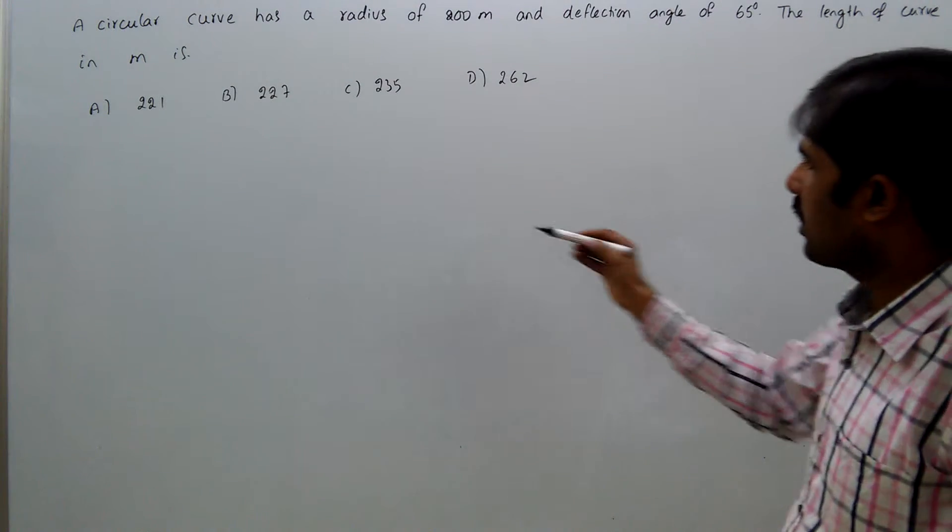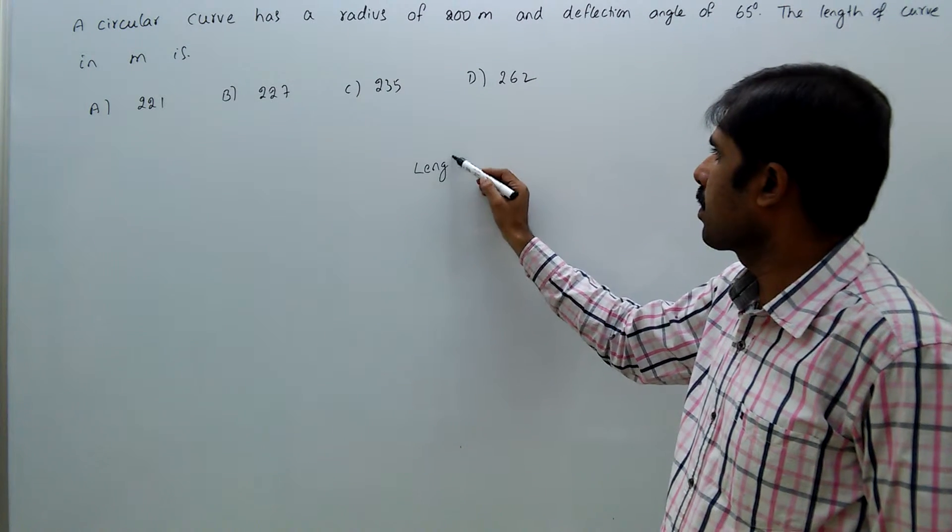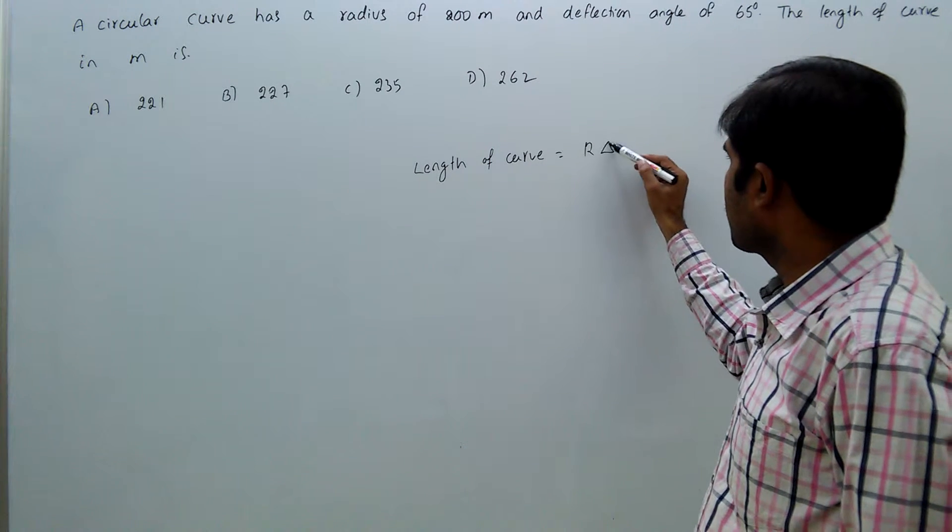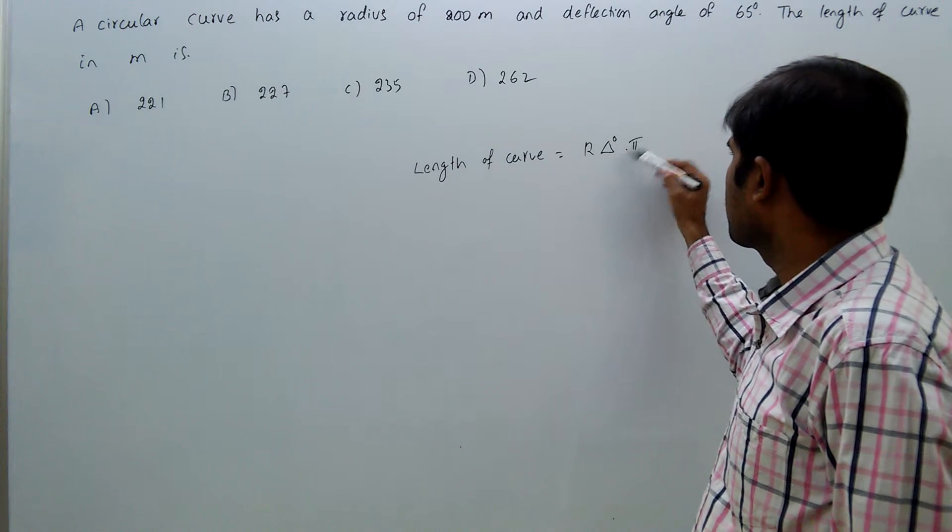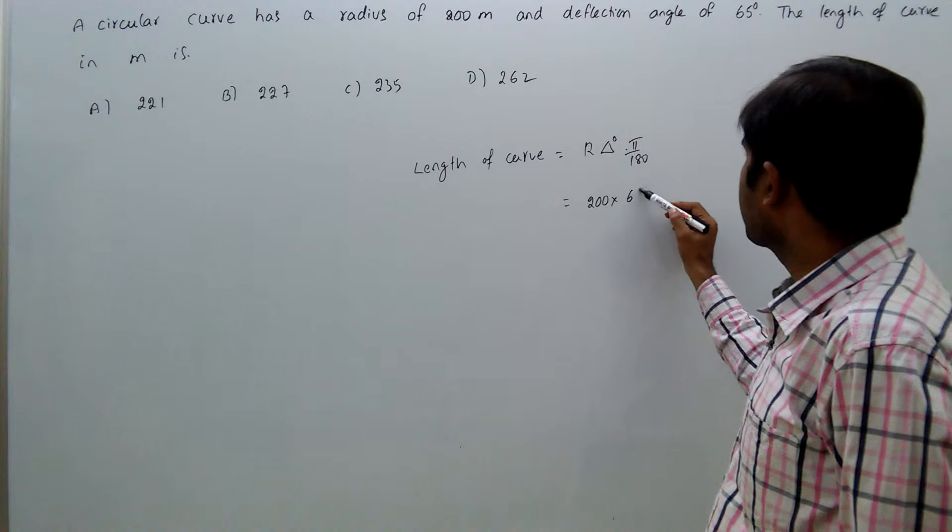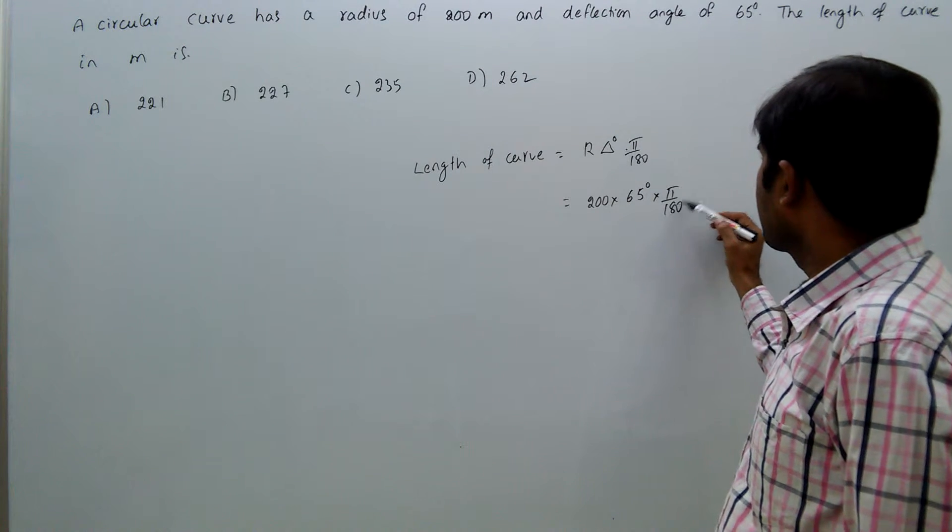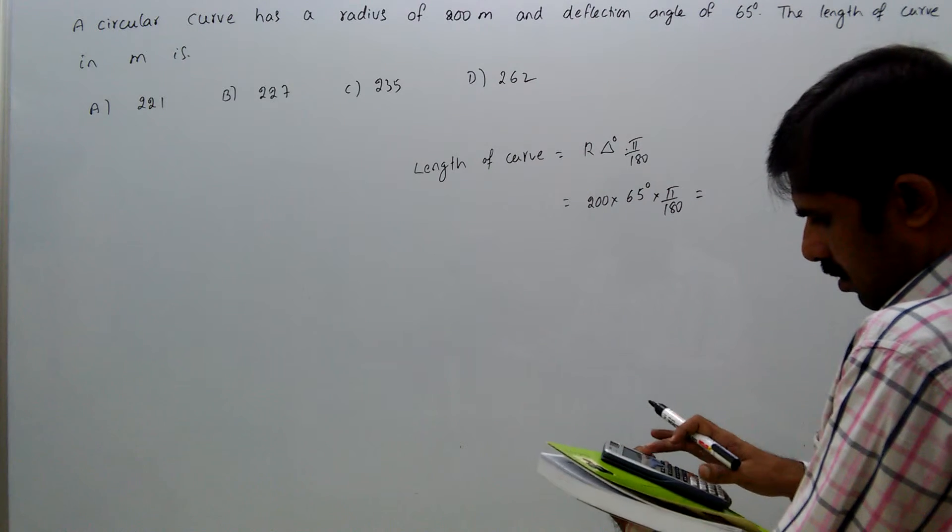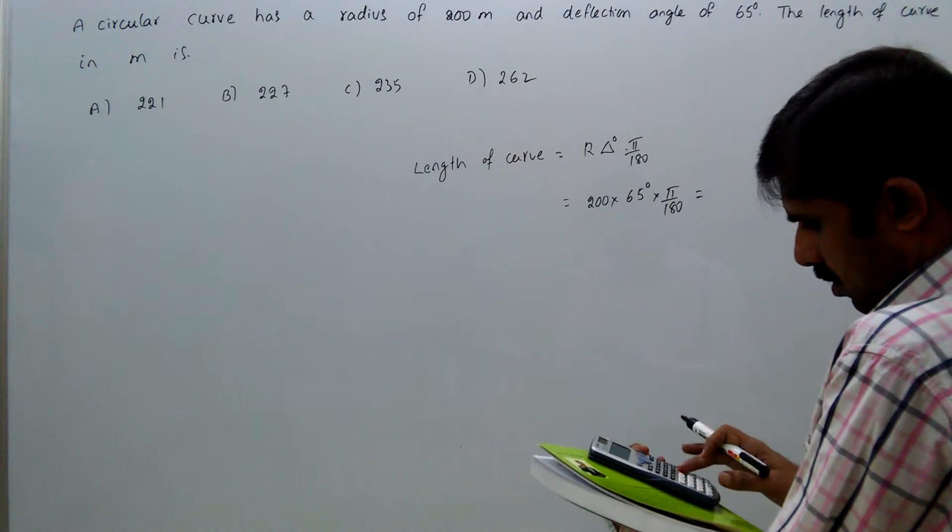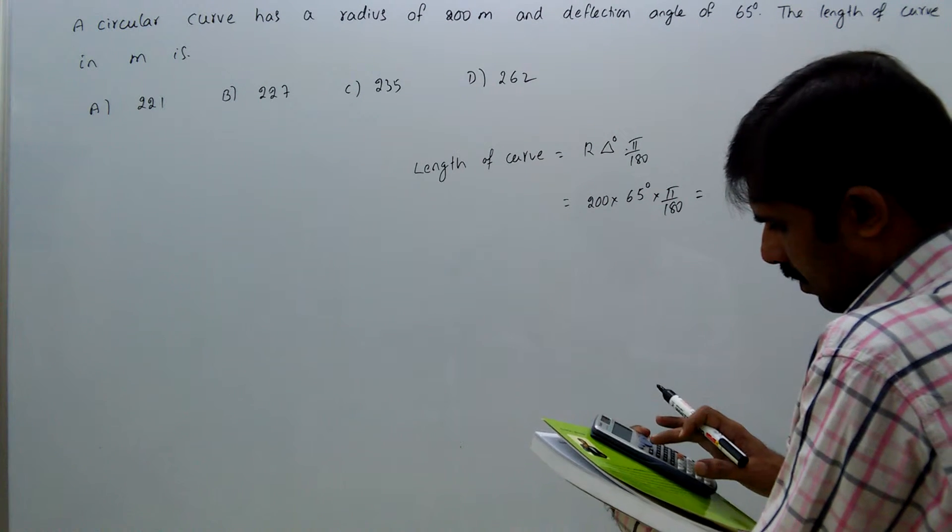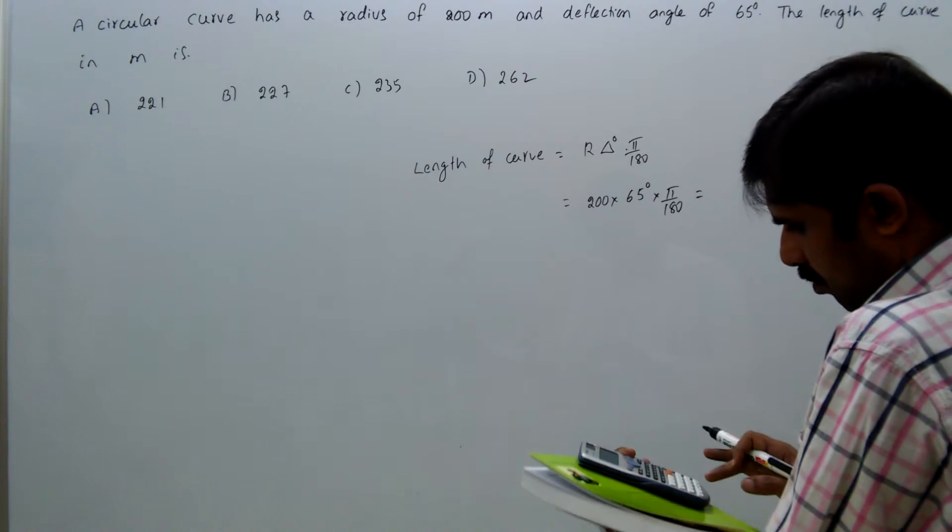We must remember the length of curve equals r delta degrees times pi by 180. R is given as 200 meters, delta is given as 65 degrees times pi by 180. That equals 200 times 65 times pi by 180.